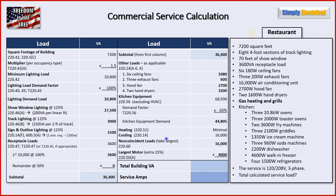Now we compute our heating. We have gas heating, so there's minimal electrical heating load — just the fan motor to circulate the heated air, which we don't know precisely, so we put it as negligible. Under 220.60, for non-coincident loads, we take the largest of the two loads that don't operate at the same time. Since our heating is all gas, the cooling will be a much larger load — so we take the 16,000 VA for cooling and ignore the heating.